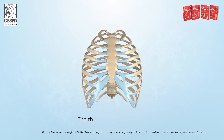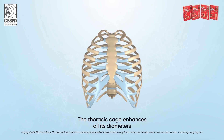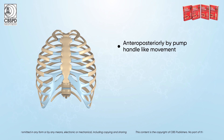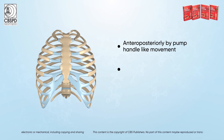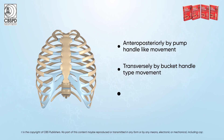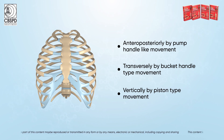The thoracic cage enhances all its diameters: anteroposteriorly by pump handle-like movement, transversely by bucket handle type movement, and vertically by piston type movement.